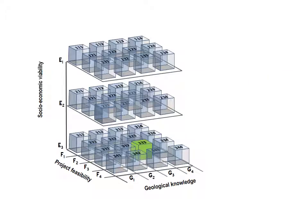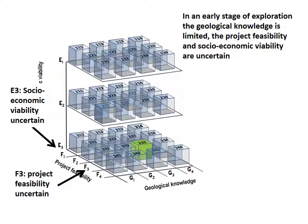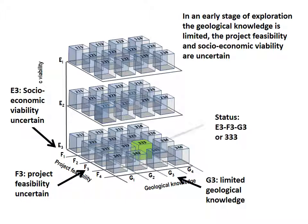In an early stage of a project, economic viability is uncertain, represented by the category E3 on the E-axis. Feasibility of development is also uncertain, categorized as F3 on the F-axis. Geological knowledge is limited, categorized as G3 on the G-axis. The status of the project is represented by a small cube located where the E3, F3 and G3 axes join.